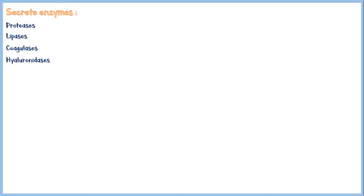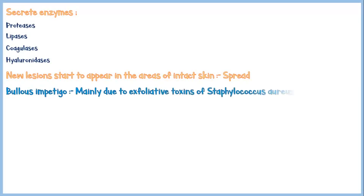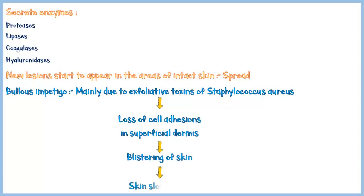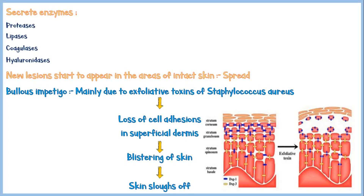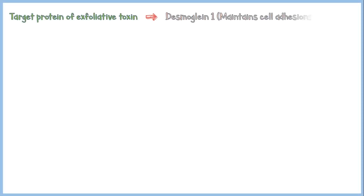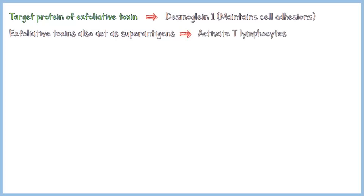Once the infection is established, new lesions start to appear on the intact skin as well, marking the spread of the infection. The pathogenesis of bullous impetigo is somewhat different — it is mainly due to the exfoliative toxins of Staphylococcus aureus. These toxins cause loss of cell adhesions in the superficial dermis, resulting in blistering of the skin followed by sloughing off of the epidermis from the stratum granulosum layer. The main target protein of exfoliative toxins is desmoglein, which maintains cell-to-cell adhesions. Exfoliative toxins also act as superantigens, stimulating the immune system to a higher degree and activating T lymphocytes, causing toxic shock syndrome. In contrast to non-bullous impetigo, the lesions of bullous impetigo usually appear on intact skin.